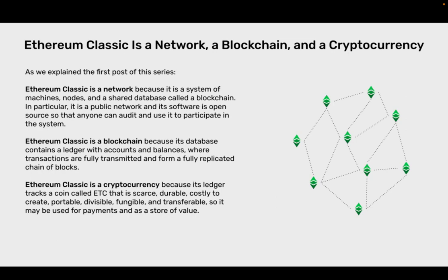Ethereum Classic is a blockchain because its database contains a ledger with accounts and balances where transactions are fully transmitted and form a fully replicated chain of blocks. Ethereum Classic is a cryptocurrency because its ledger tracks a coin called ETC that is scarce, durable, costly to create, portable, divisible, fungible and transferable, so it may be used for payments and as a store of value.